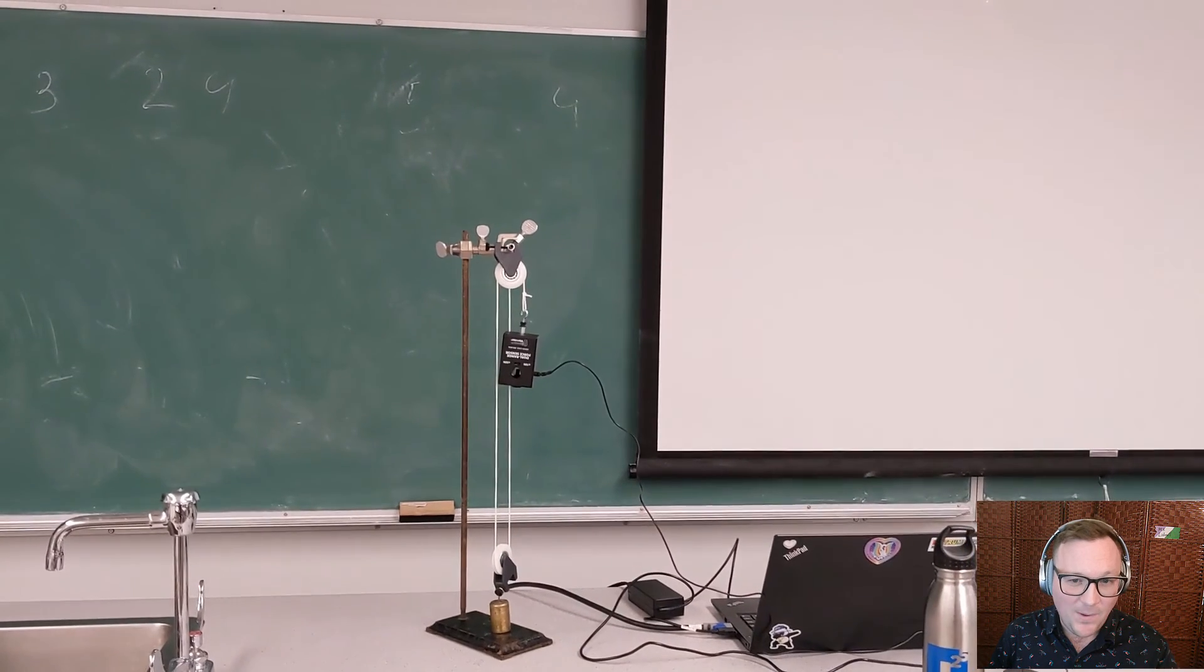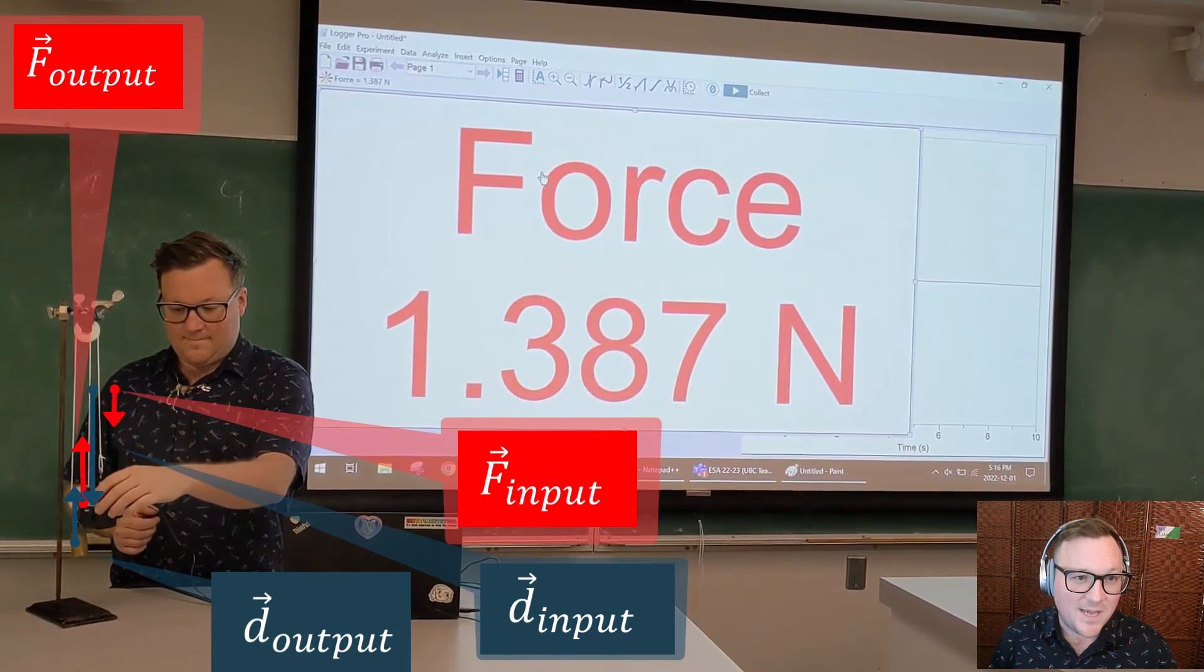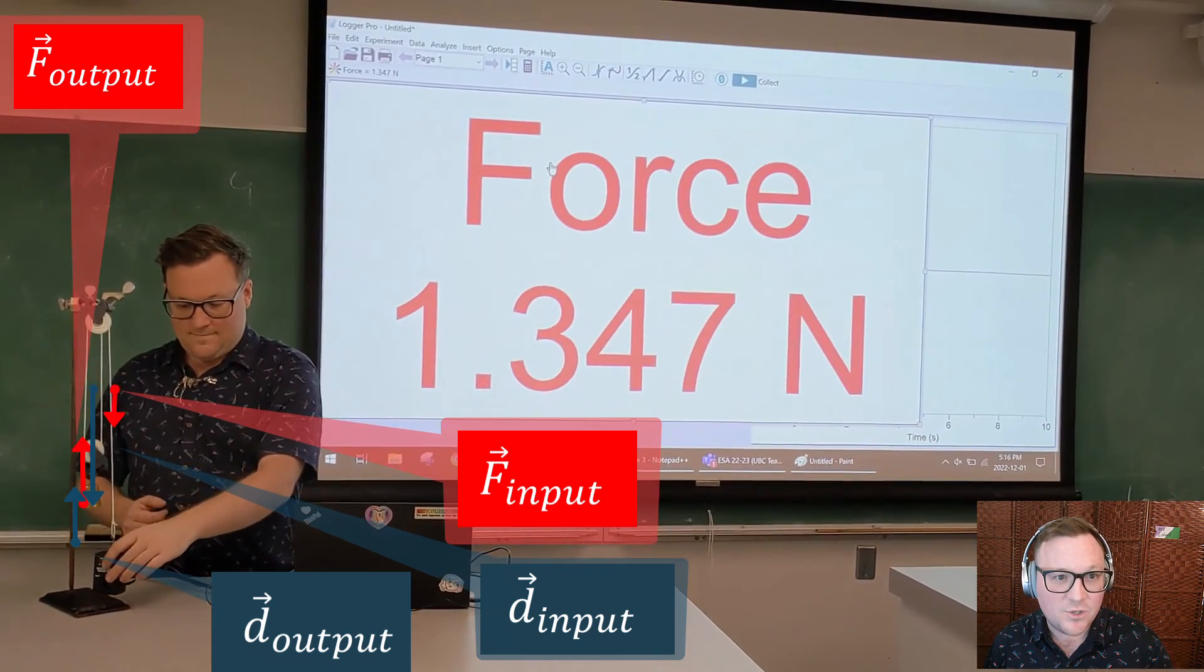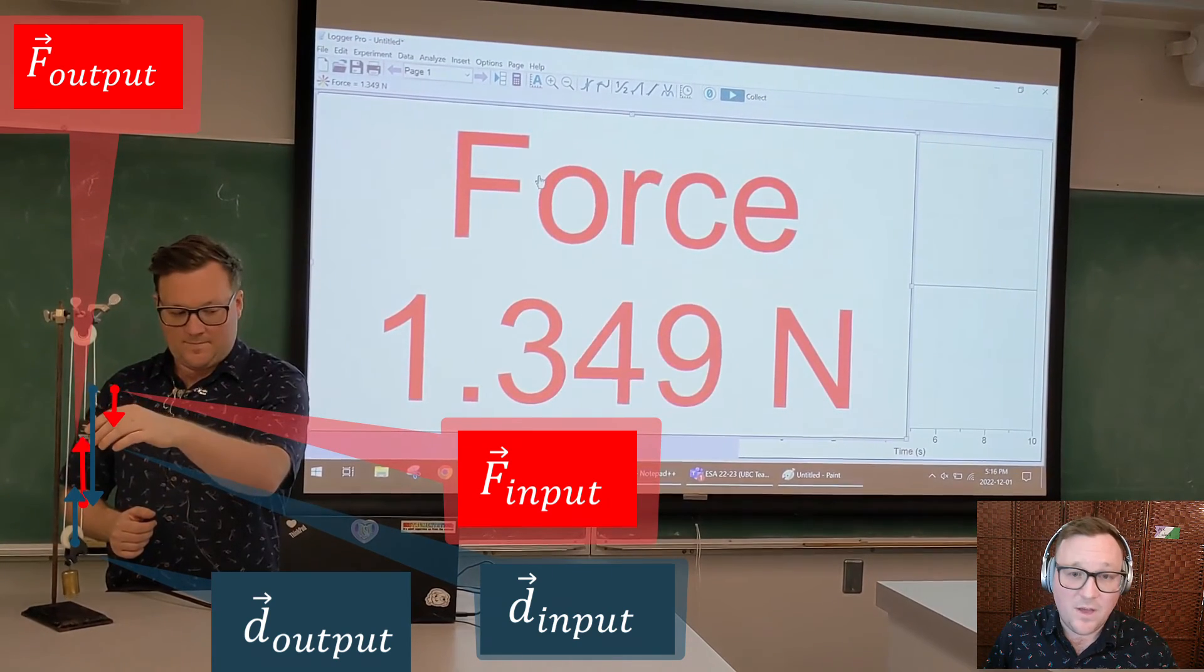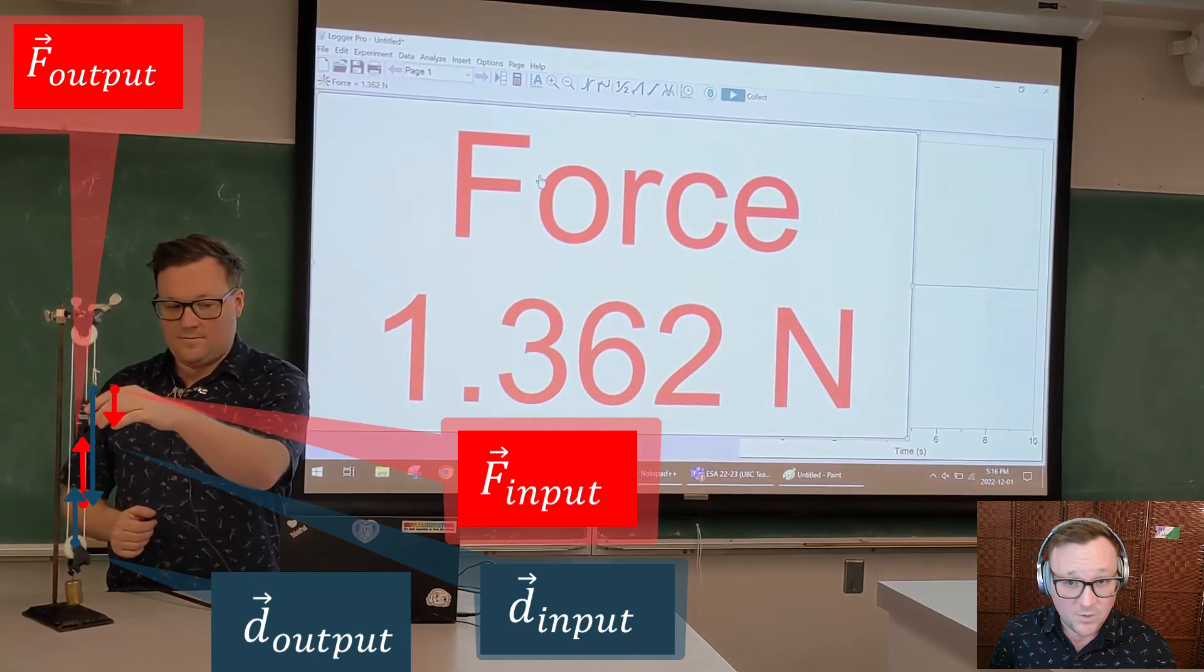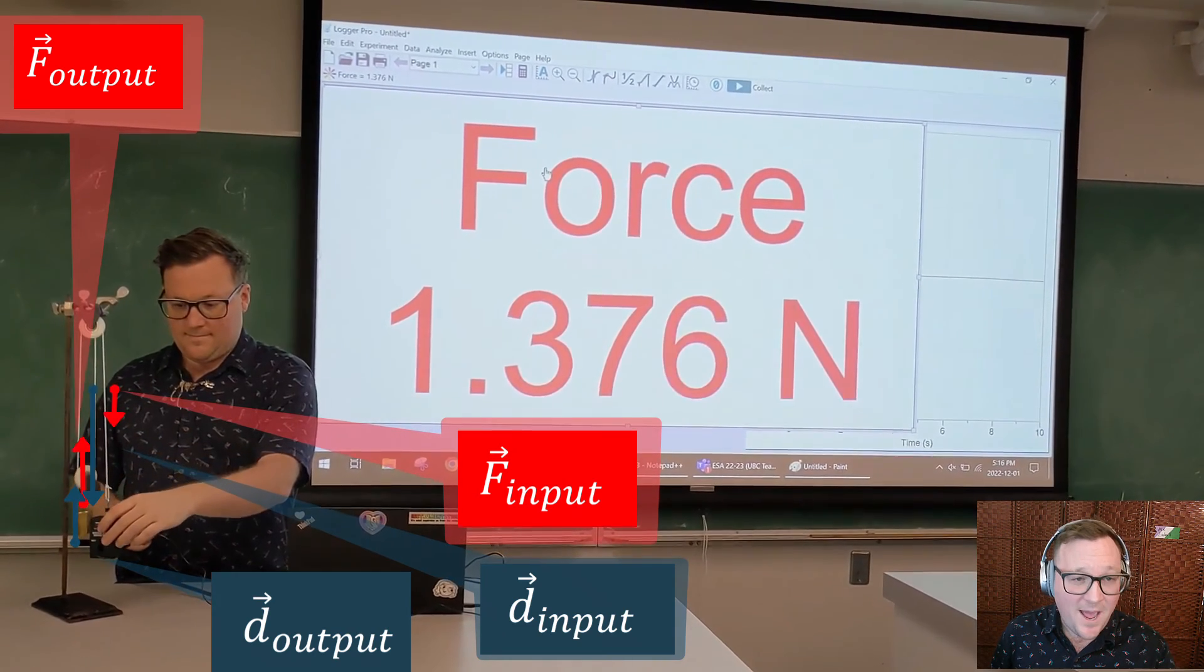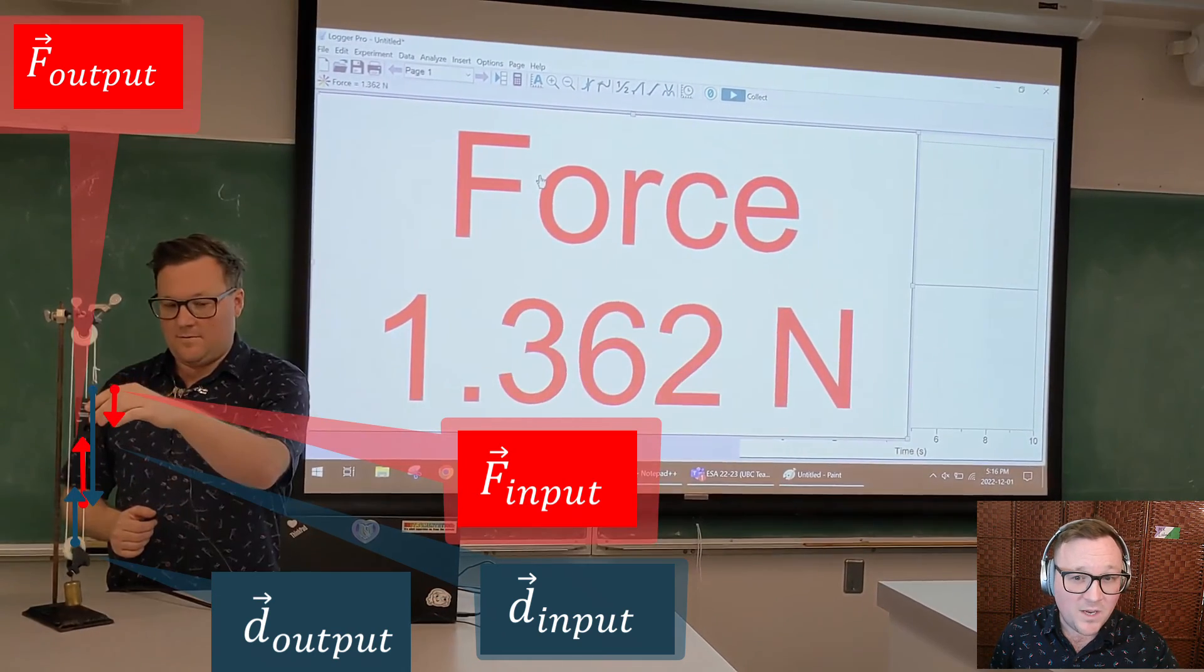So now notice when I pull it, the applied force is around half of what we saw before. So again, this isn't ideal conditions, so we're just looking for about roughly. The other thing to notice is that the distance that my hand moves is a lot more than the distance that the mass moves. It's actually twice as far. So in this case, we're doing half the force, but we're actually moving twice as far.